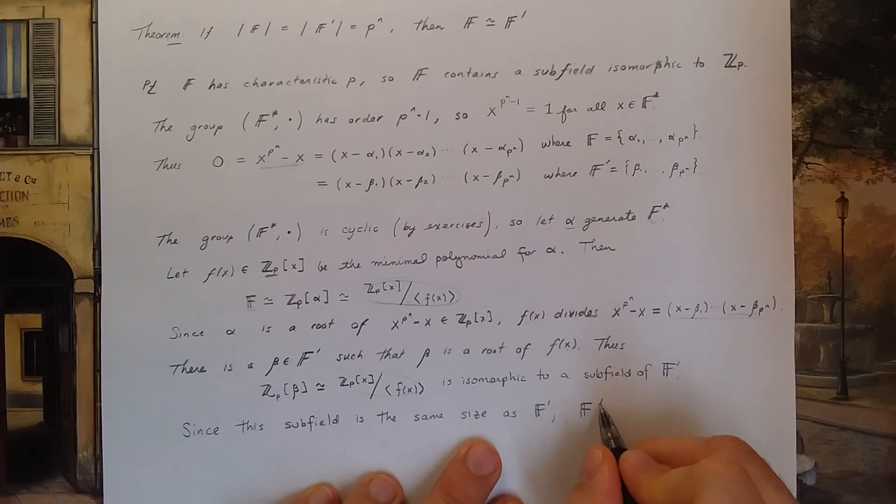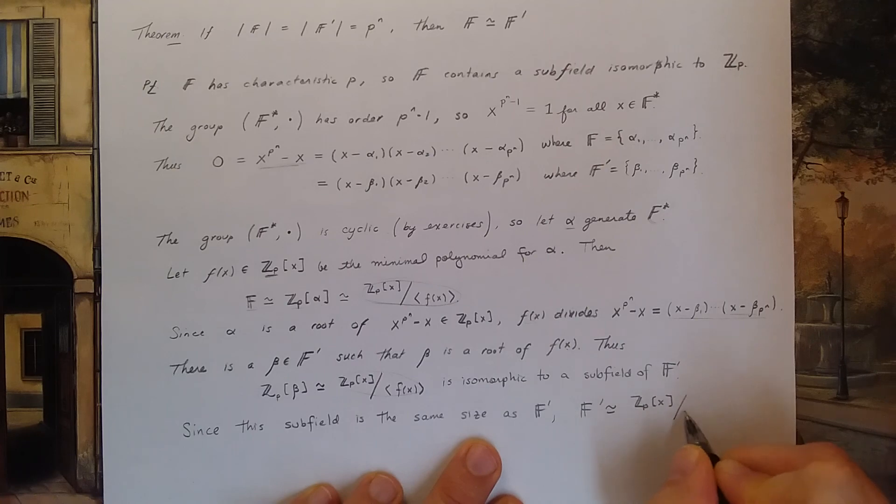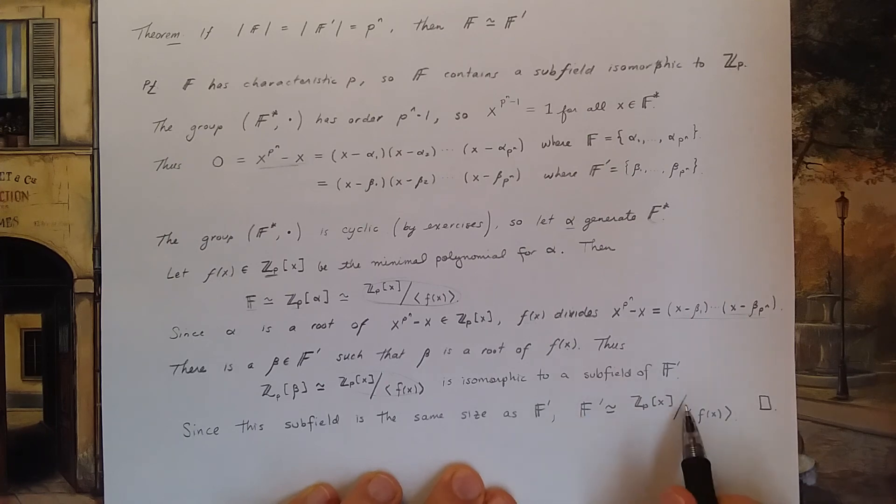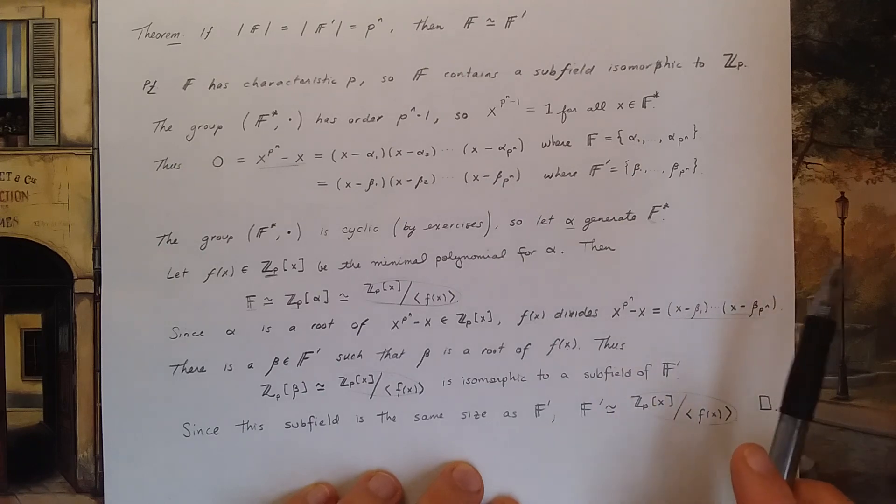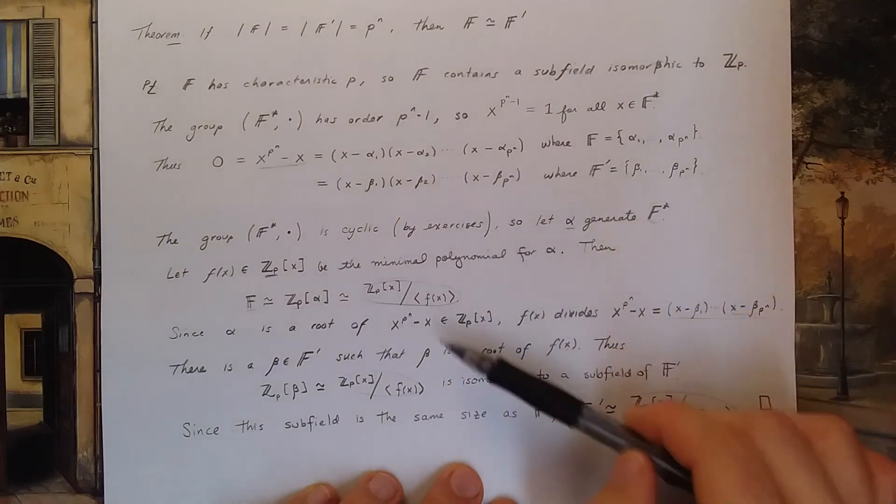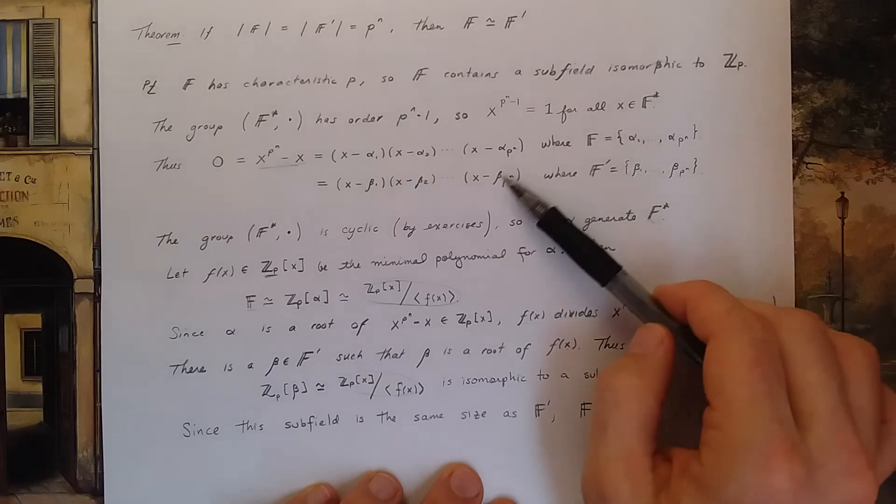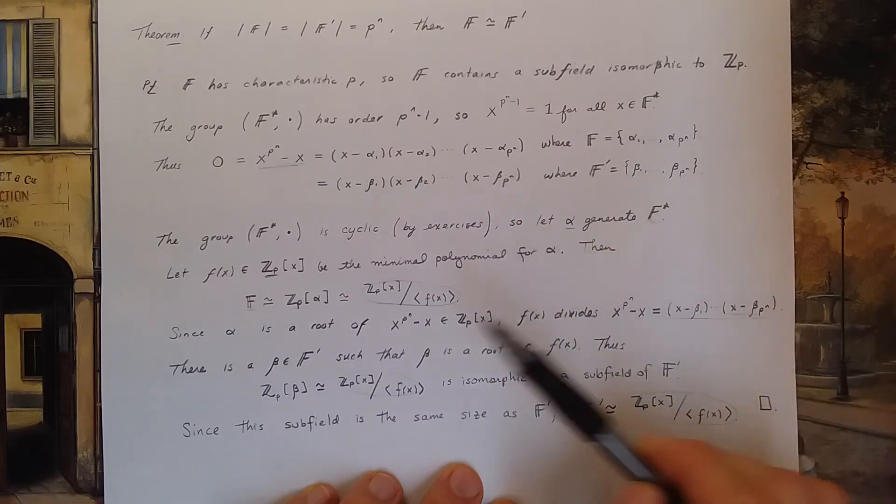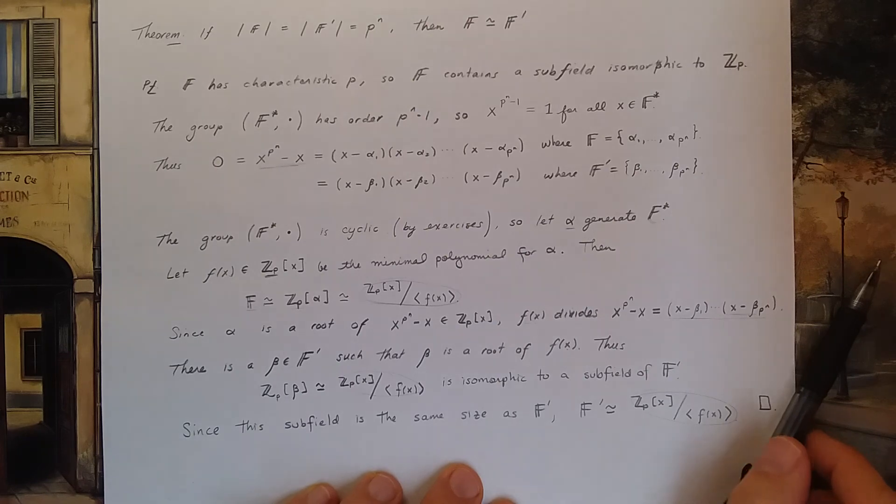So both F prime and F are isomorphic to the same factor ring. This was kind of a delicate proof, a little bit tricky, but I know you can get it. It uses a lot of the ideas that we've seen previously in our course. Okay, that is the last theorem of our course. Outstanding.